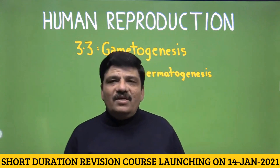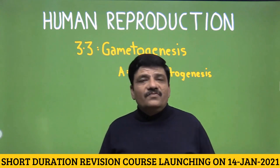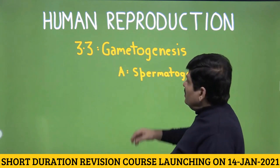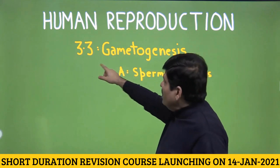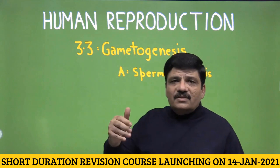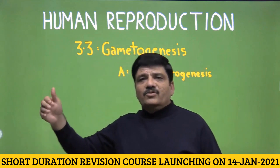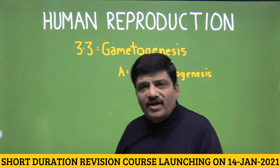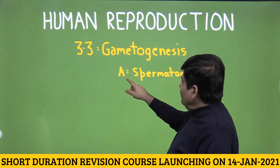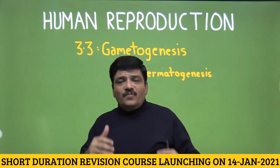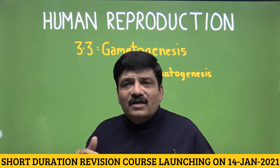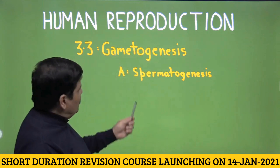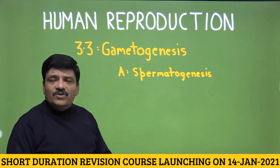Let us continue our discussion on chapter 3, class 12th NCERT biology for your NEET entrance examination. This chapter is human reproduction and the topic we are going to discuss is section 3.3, gametogenesis. We will look at spermatogenesis — the formation of sperm. Sperm is the gamete of the male sex in human beings.